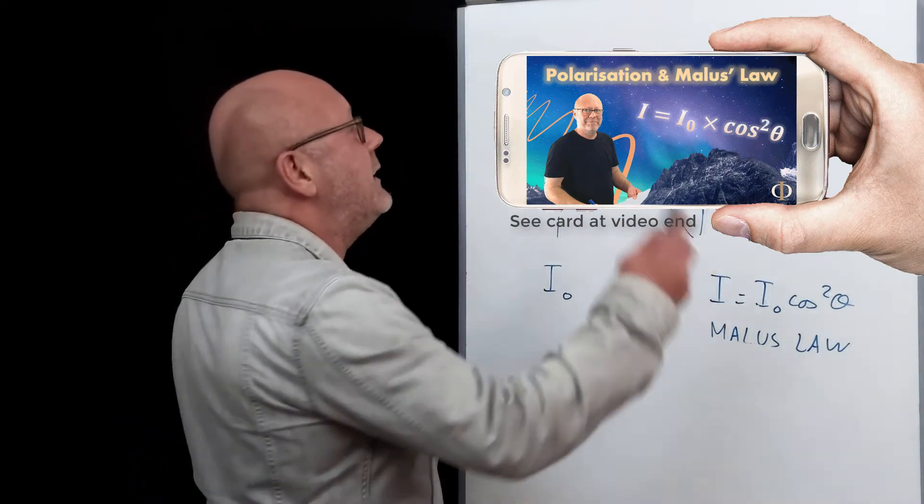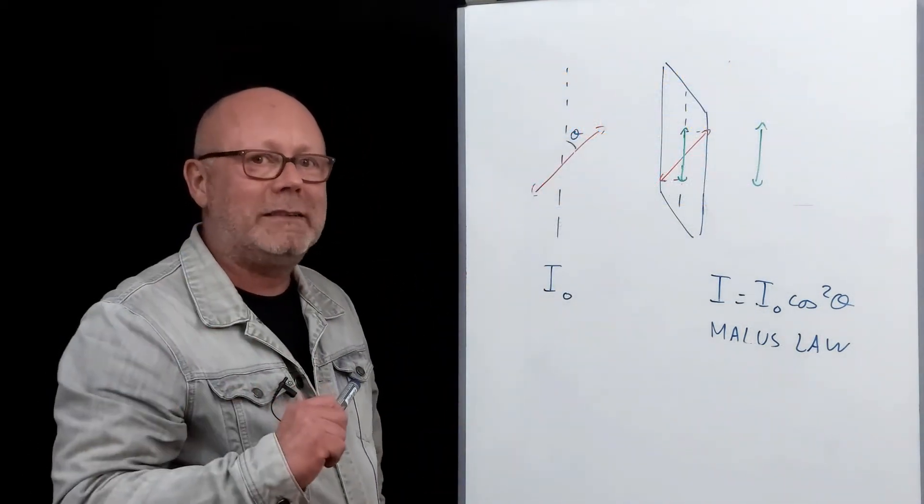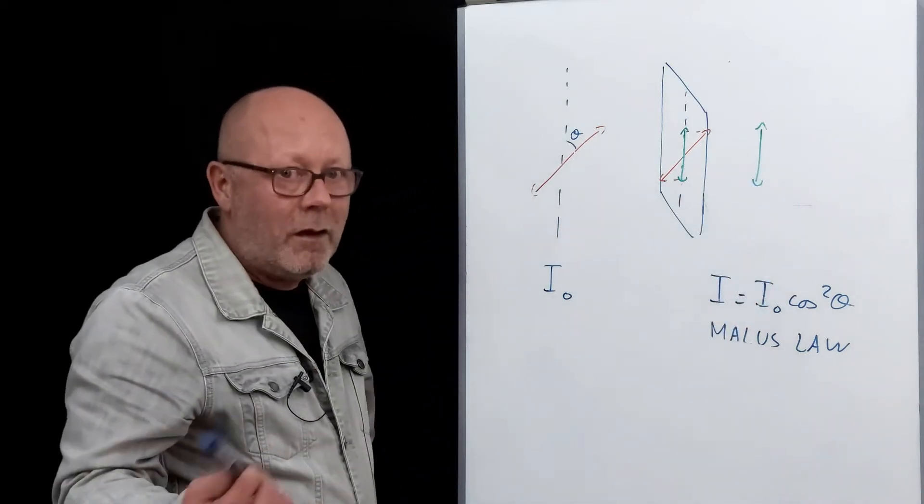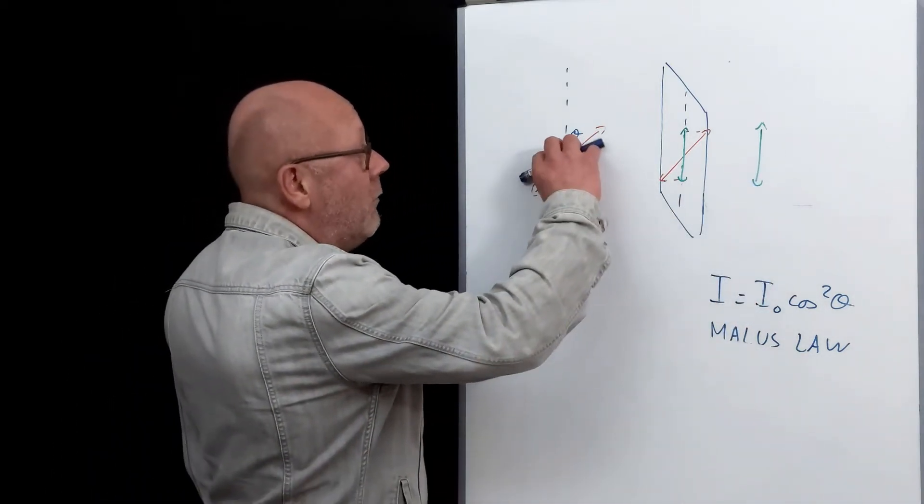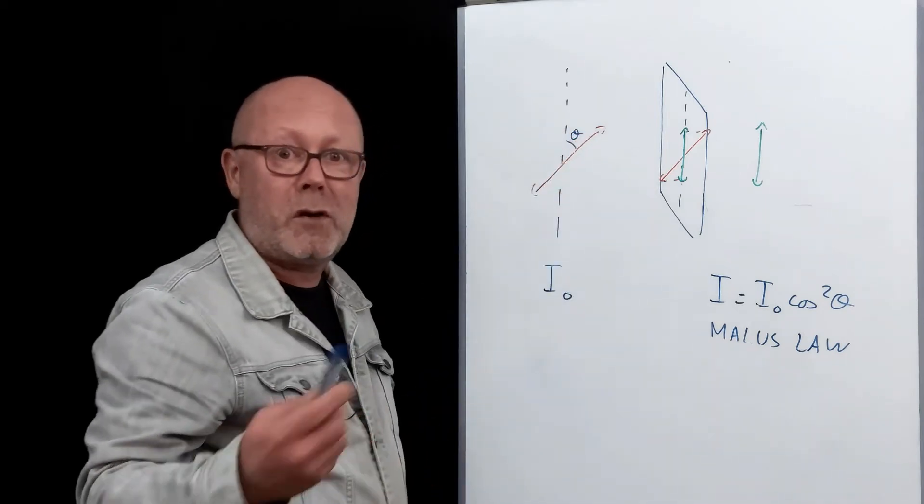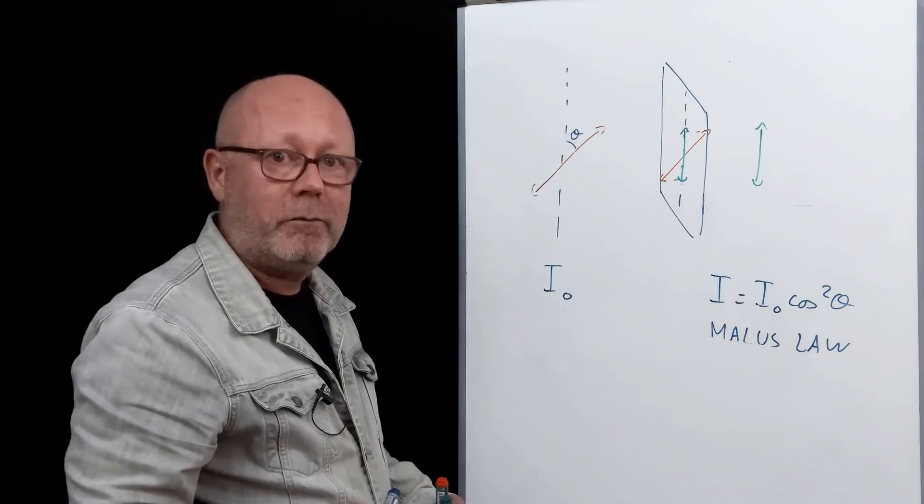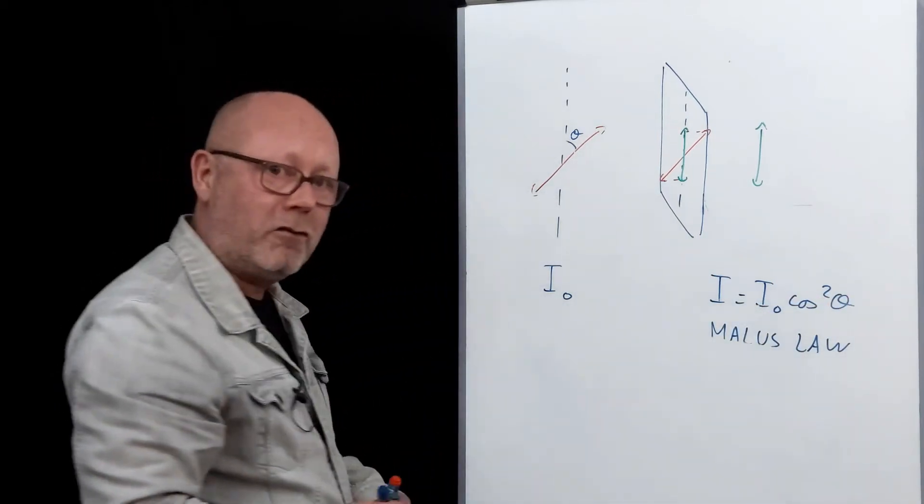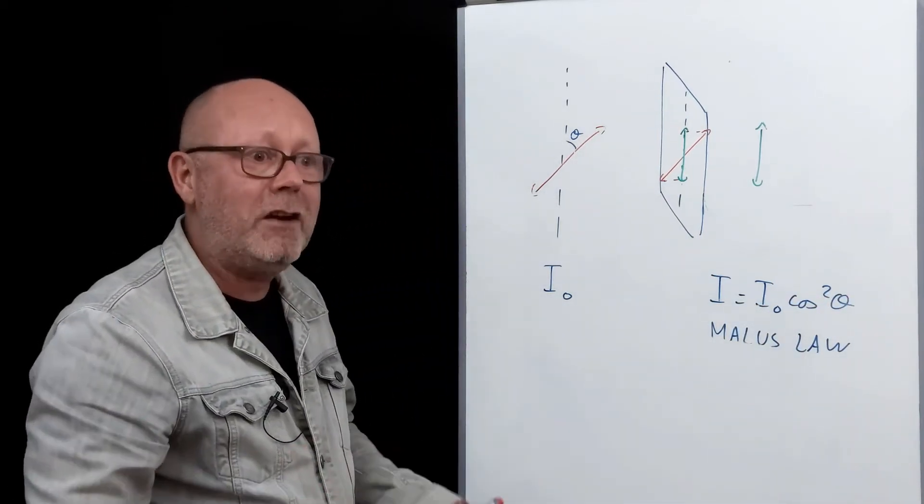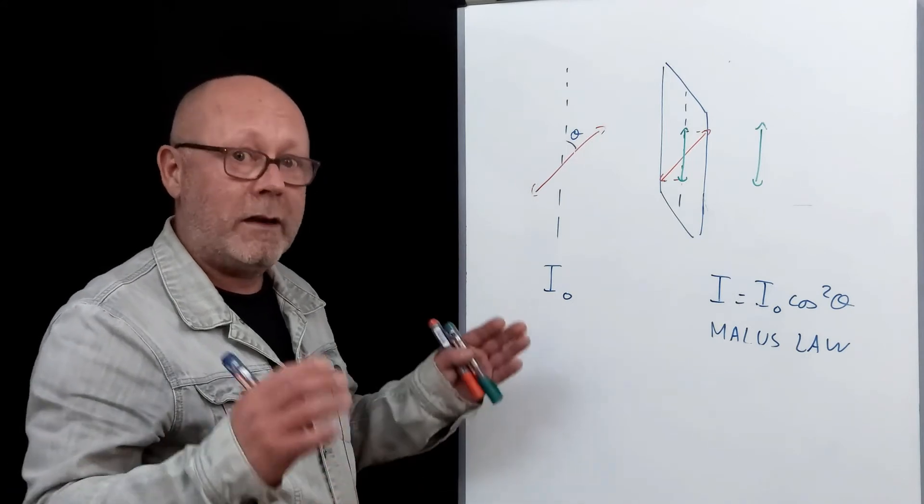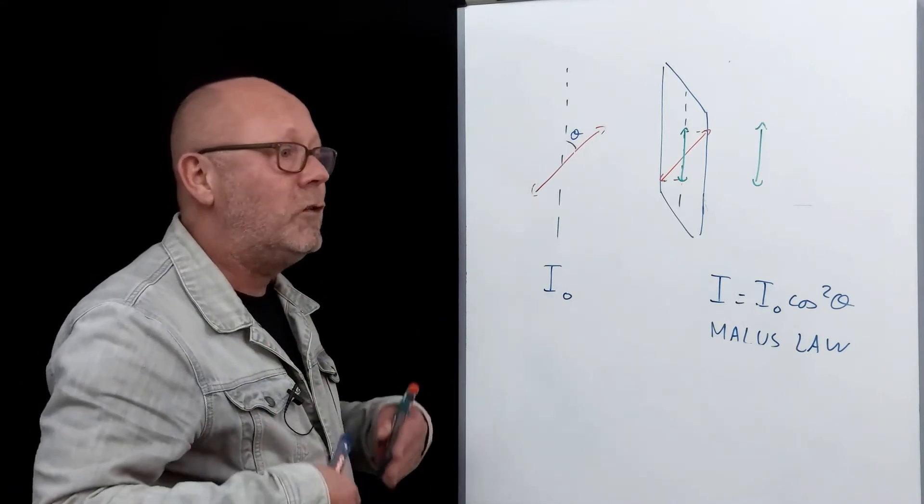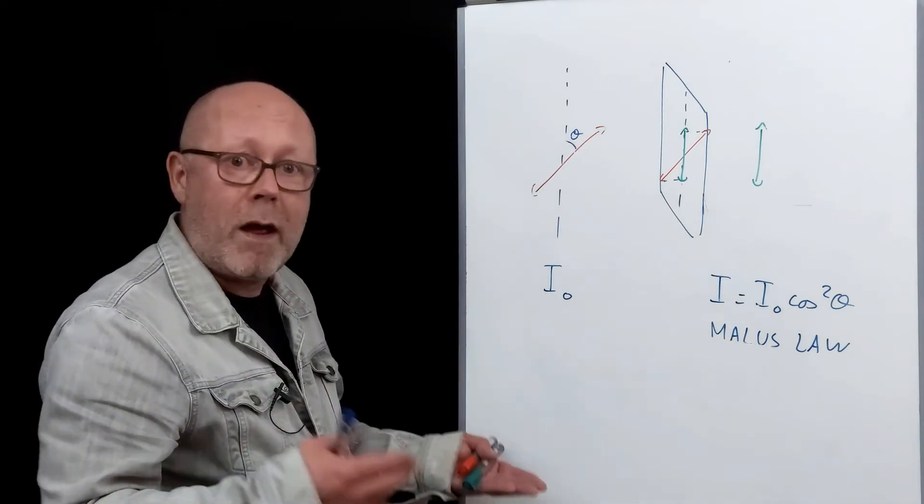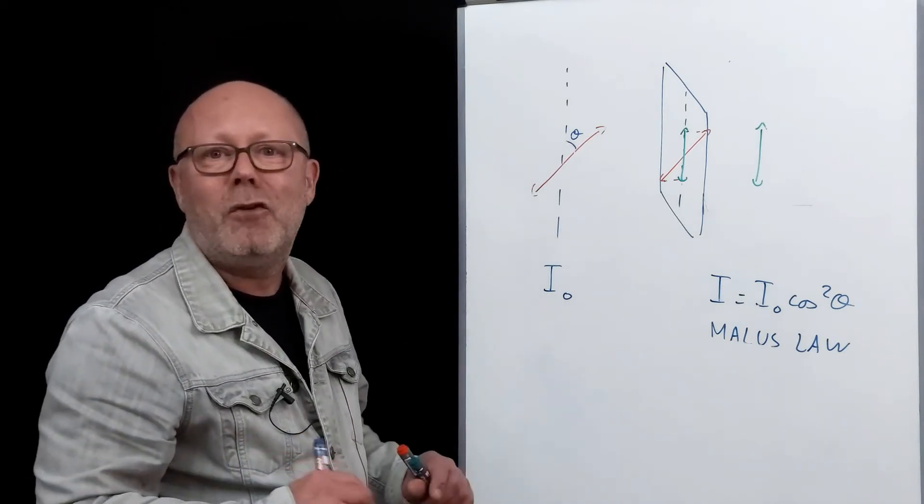If we replace the incident polarized light by unpolarized light and still want to calculate the intensity coming out of the polarizer, we could just repeat this operation for all possible angles of polarization and take the average. To do so, we can consider Malus law like a function, and then take the average of that function over an interval of angles which correspond to all the possible angles of polarization. That interval would be between 0 and π. Let's do that.